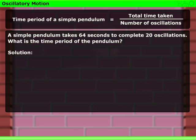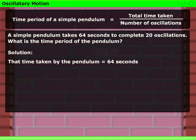Let us try to solve this problem. We know that time taken by the pendulum is equal to 64 seconds and the number of oscillations is equal to 20.